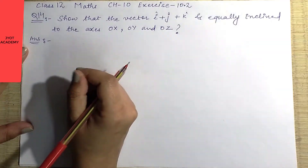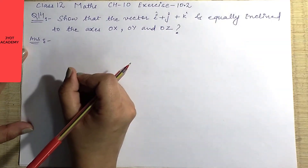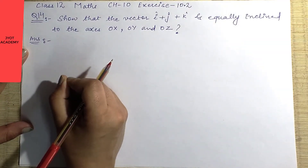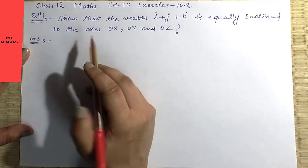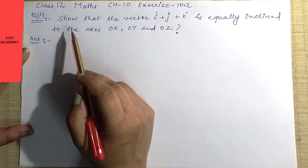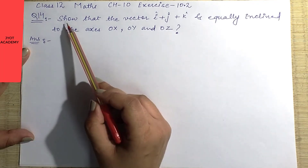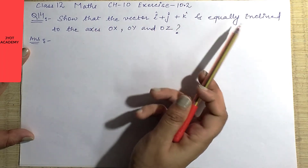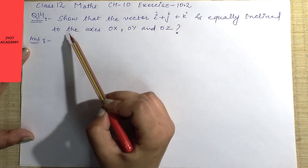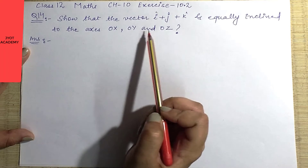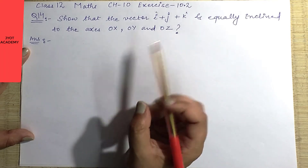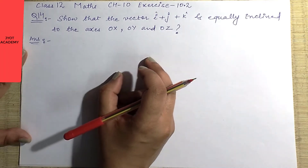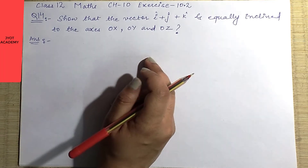Hello students, welcome back to my YouTube channel. We continue Exercise 10.2 from question number 14. Let's see what we need to do in this question — show that the vector is equally inclined to the axes OX, OY, and OZ.